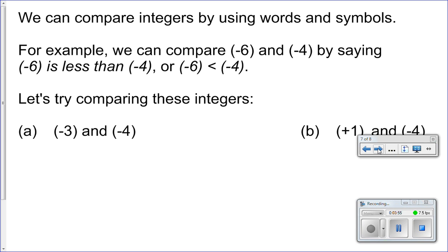We can compare integers by using words and symbols. For example, we can compare negative 6 and negative 4 by saying negative 6 is less than negative 4, or we can use the less than symbol.